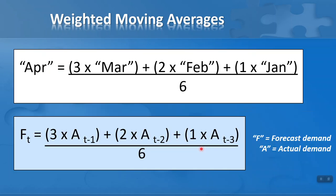Let's convert this into the formula. In the weighted moving average time series formula, I have a forecasted value F(t) and actual values. The forecast for time t — April — equals: a weighting of three multiplied by the actual at t-minus-one (March), plus a weighting of two multiplied by the actual at t-minus-two (February), plus a weighting of one multiplied by the actual at t-minus-three (January), all divided by six, which is the sum of the weights. You can use any weighting values appropriate to your situation, and in a spreadsheet you can change them to run what-if analyses.